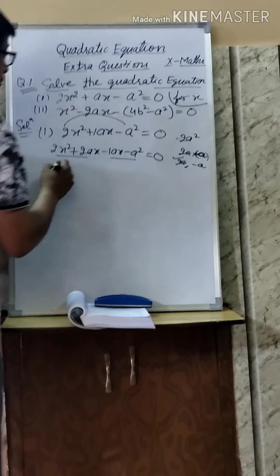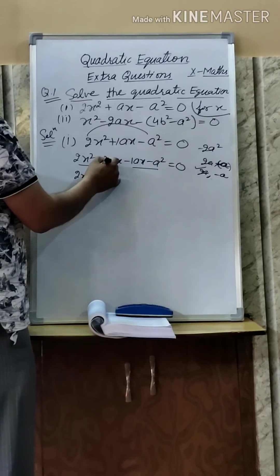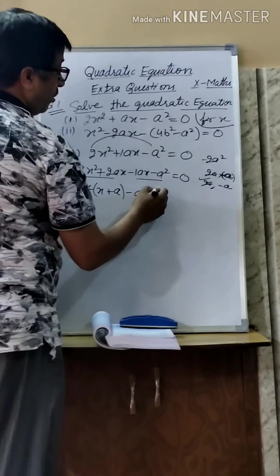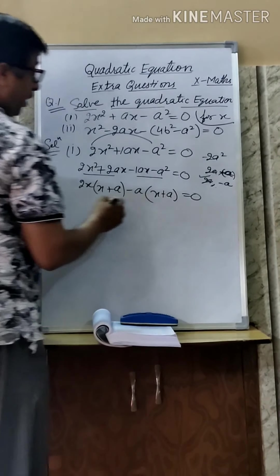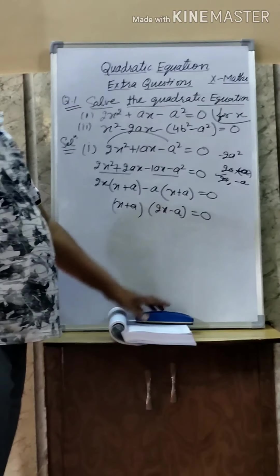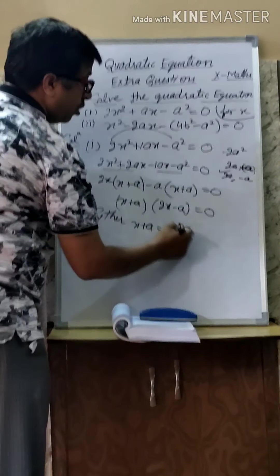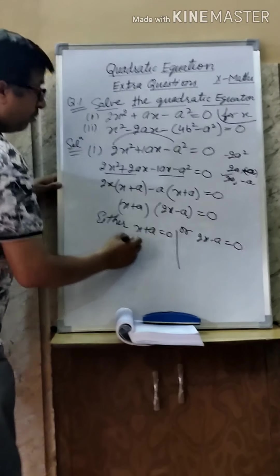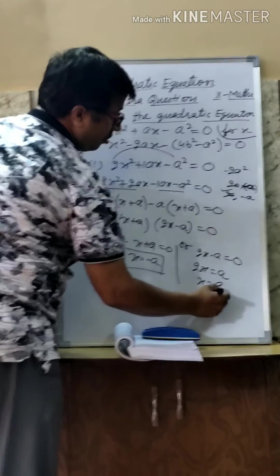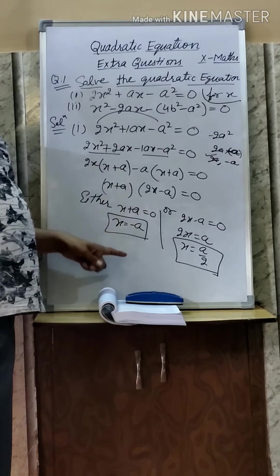Now, what is common? First, 2X is common, so it is X plus A inside. And on the other side, minus A is outside — minus A squared, minus A outside. So X plus A is left inside. So we get: (X plus A) into (2X minus A) is equal to 0. Now the product of two factors is 0. So either X plus A equals 0, or 2X minus A equals 0. So X equals minus A, and 2X equals A, so X equals A by 2. I have solved this equation by factorization method.